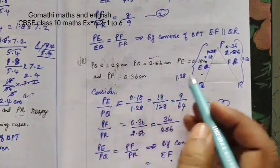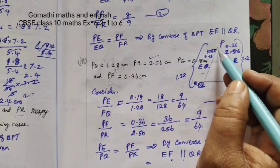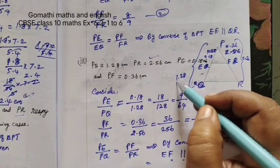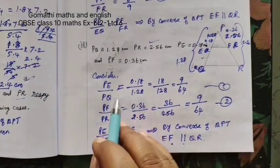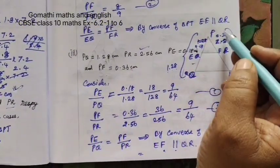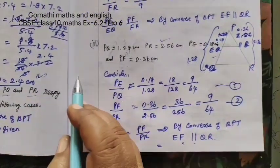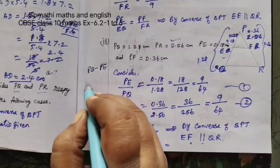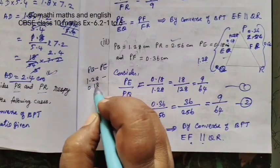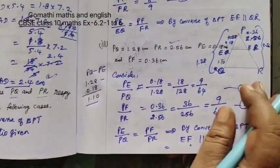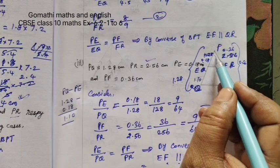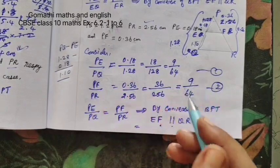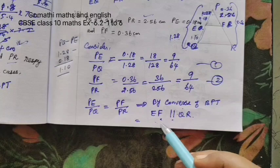Then the third one. Here also 4 values given. This is equal to 0.18. Then this full PQ equal to 1.2. So you can write PE by PQ. Similarly this side, PF by PR. Or in other way you can do it. In the PQ, you separate this PE, so 1.28 minus 0.18. The same method you can use. In three ways we can write this. Since 1 and 2 equal, EF parallel to QR.